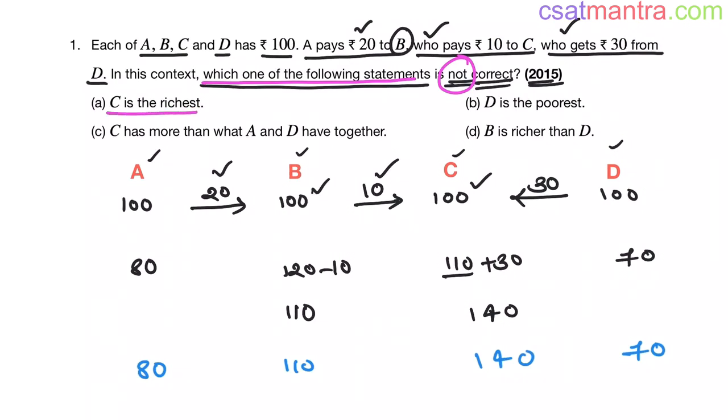C is the richest. Yes, my friends. C has 140 rupees. C is the richest person. D is the poorest. D has 70 rupees. This is less than 80, 110 and 140. So D is the poorest. This is also correct.